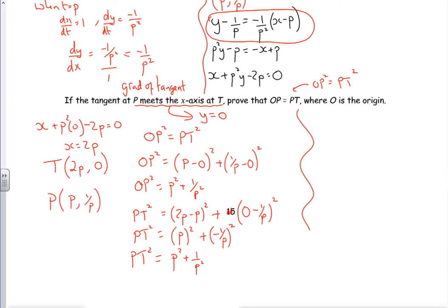So if you look, OP squared is the same as PT squared. So OP squared is PT squared, therefore OP is PT. There you go, job done. An extra 2 minutes, that's all I needed. Right, there you go.